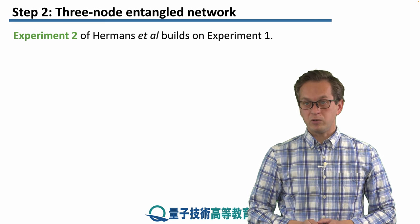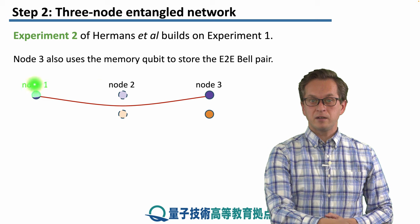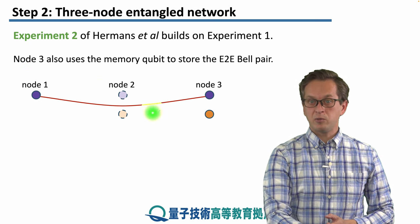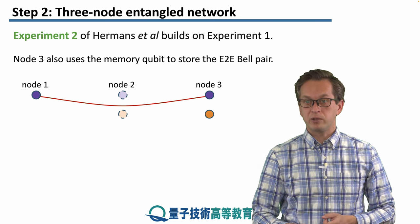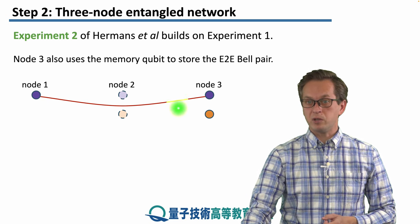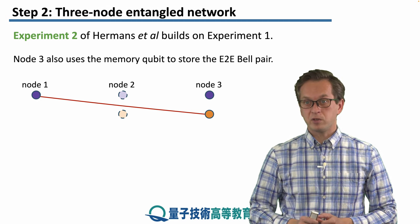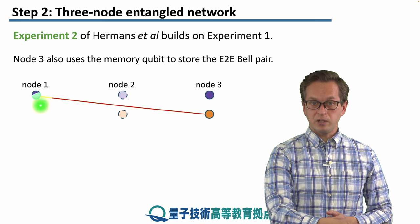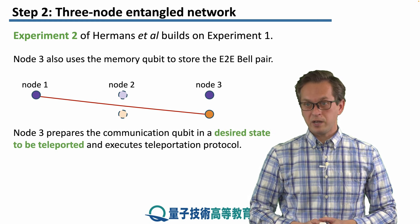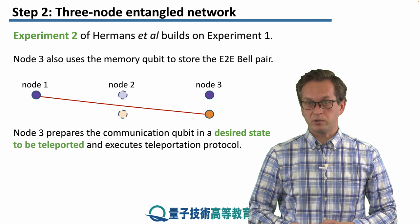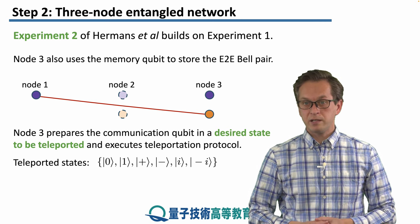Now let's talk about how we can actually consume such entanglement. This is the second experiment performed by the group. We start where we left off with experiment one: we have established an end-to-end Bell pair between communication qubits at node one and node three. But this time we need another qubit for teleportation, so node three can now also access its memory qubit. Node three transfers the state from its communication qubit to its memory qubit, so it is the communication qubit at node one and the memory qubit at node three that are entangled. Then node three prepares its communication qubit in the desired state that it is trying to teleport to node one.